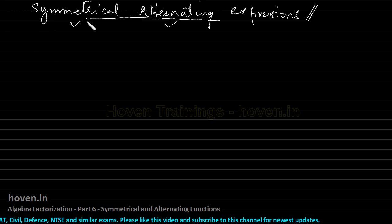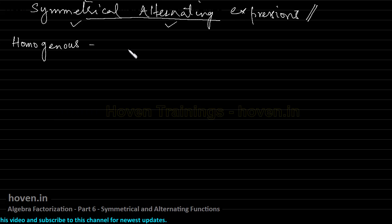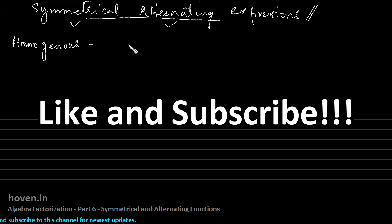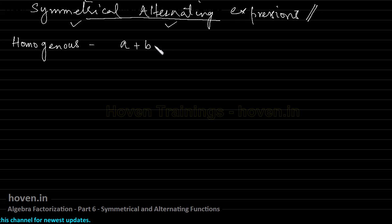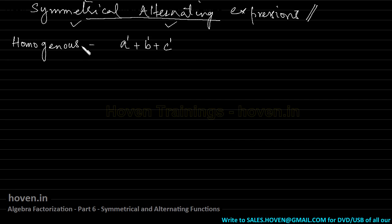Symmetrical and alternating expressions are in the first place homogeneous. Homogeneous means that the degrees of all the terms are the same. For example, in the expression a plus b plus c, the degree of a is 1, b is 1, c is 1. The degree of all terms is 1, and therefore this is a homogeneous expression in degree 1.